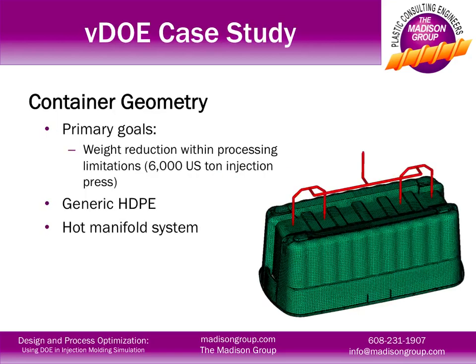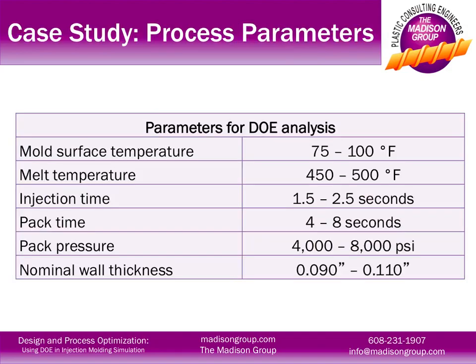A quick case study on a polyethylene container: the primary goal of the analysis was to reduce part weight while maintaining processability within a 6,000 ton press. The key process parameter for the DOE analysis was nominal wall thickness — the thinner we can make the nominal wall, the more part weight we can save, as long as we can manufacture it within a 6,000 ton press.